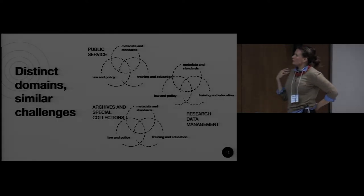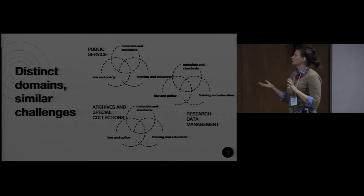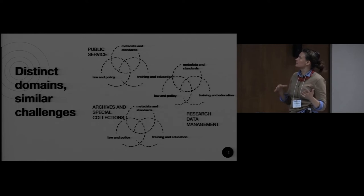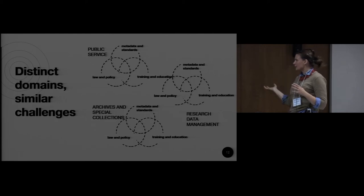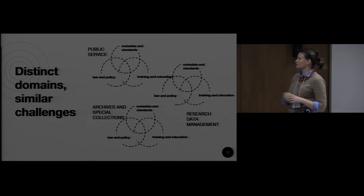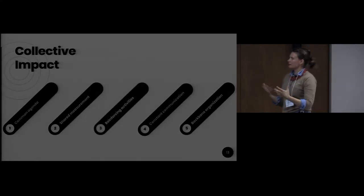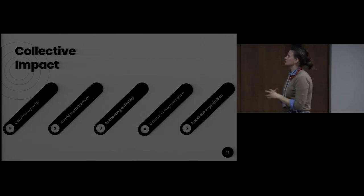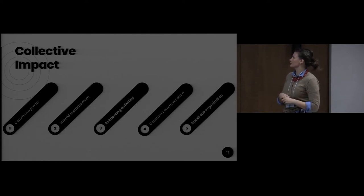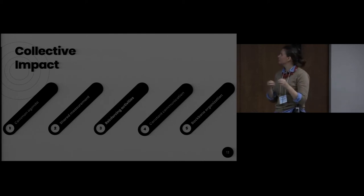SPIN operates in distinct domains but has similar challenges, and they're often overlapping and iterative. Discussions cover public service, metadata and metadata standards, law and policy, training and education related to research data management, and all the same spaces feed into discussions around archives and special collections. SPIN takes a collective impact approach — it is a community of practice with a common agenda, shared measurements, reinforcing activities, constant communication, and a backbone organization structure.